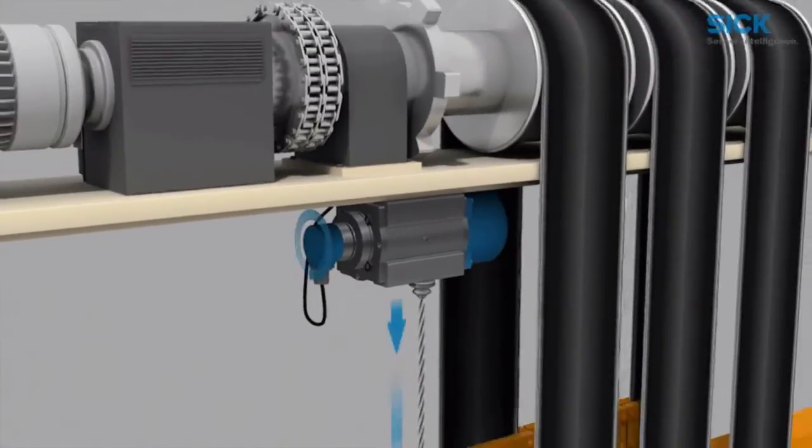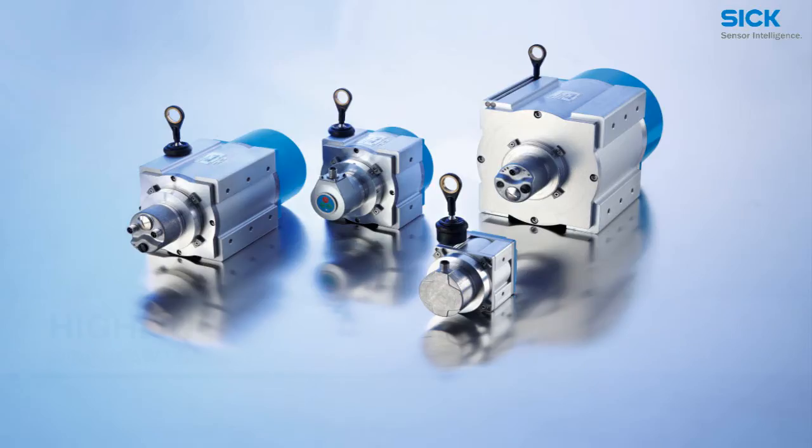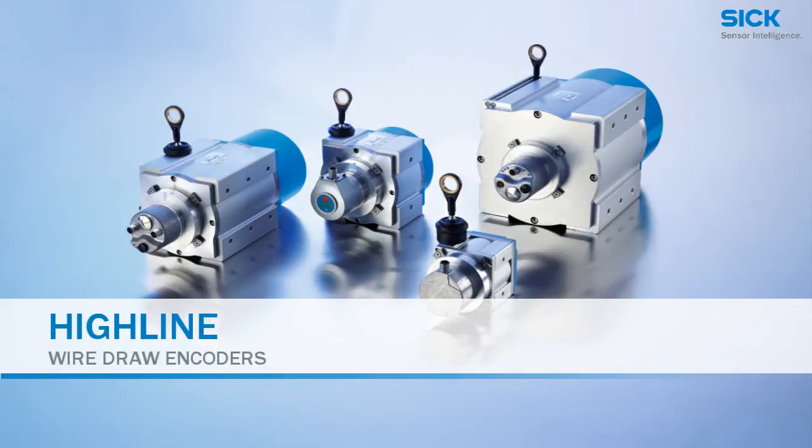This positioning is primarily carried out with SICK wire draw encoders. The Highline wire draw encoder product family is suited for measuring lengths over 10 meters.